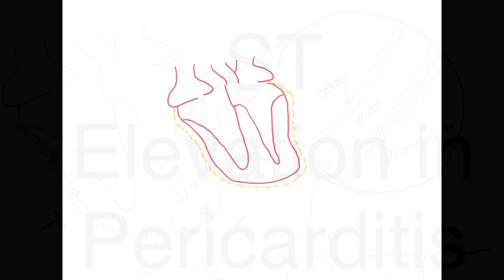I want to give a quick update on something we talked about last week: pericarditis, and why pericarditis is going to cause ST elevation. It turns out that pericarditis causes ST elevation because of the effects on the epicardium, or the outer layer of the heart tissue.